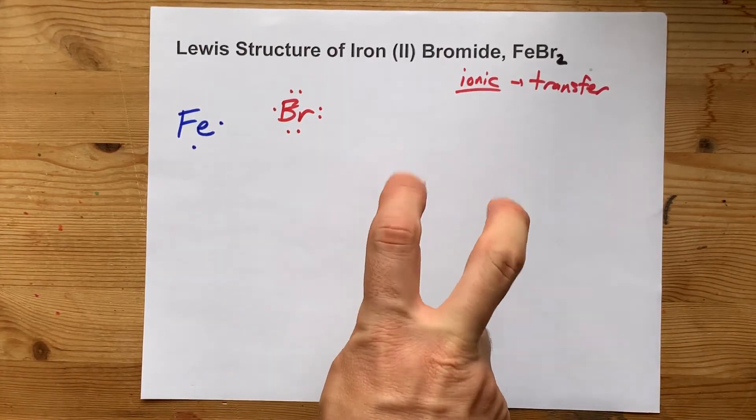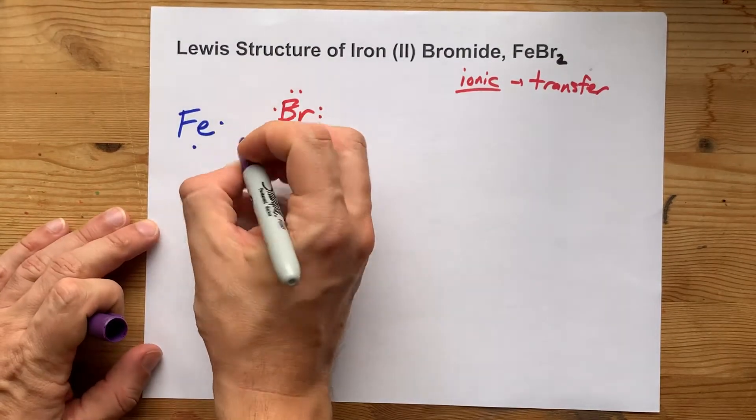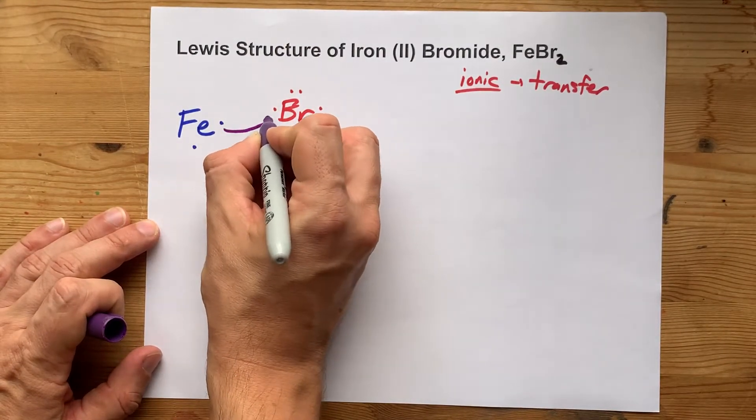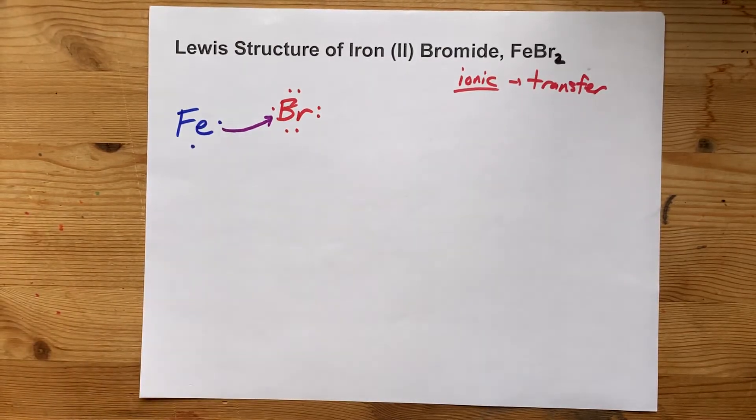Non-metals, other than hydrogen, usually want a full octet, or eight electrons in their outer shell. So iron will give one electron away to complete the octet on this bromine.